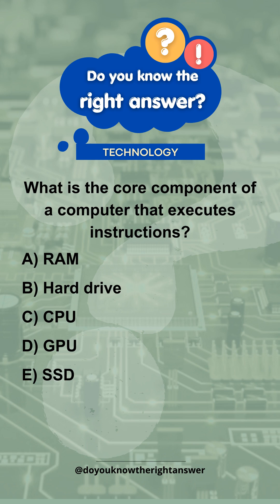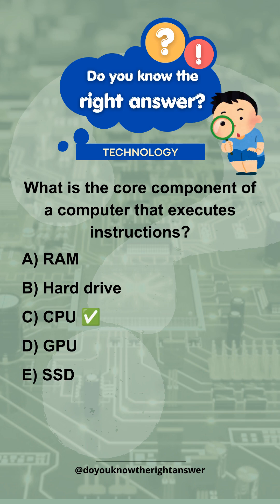What is the core component of a computer that executes instructions? A. RAM. B. Hard Drive. C. CPU. D. GPU. E. SSD. Correct answer is C. CPU.